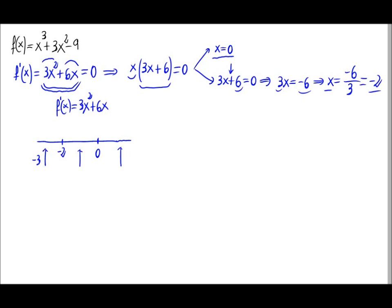Let's pick a value smaller than -2, for example -3. Due to continuity properties of the derivative of the polynomial, in the interval up to -2 the sign will stay always the same. The same thing will happen between -2 and 0, and from 0 to plus infinity. Between -2 and 0 let's use -1, and for bigger than 0 let's use 1.